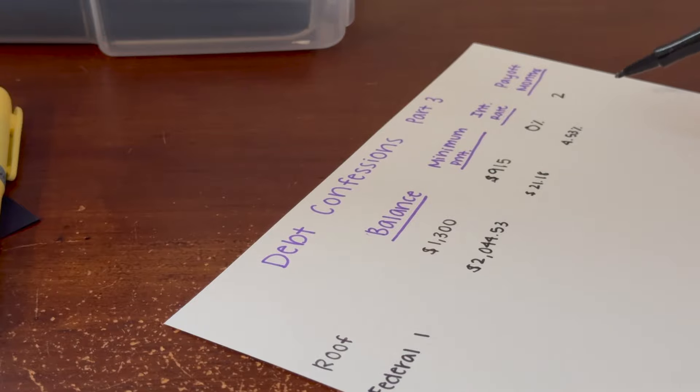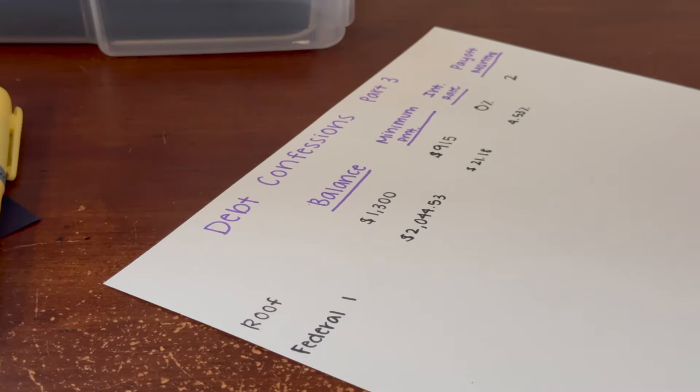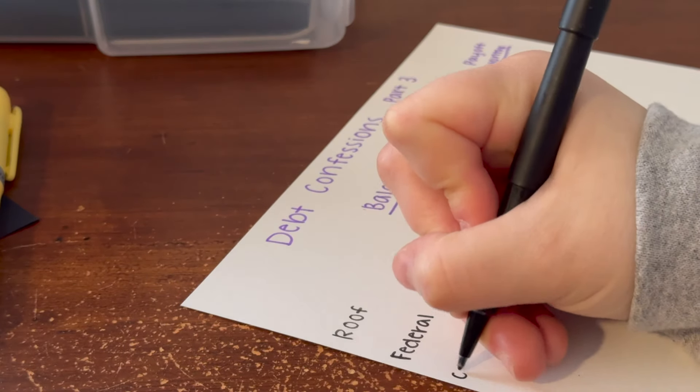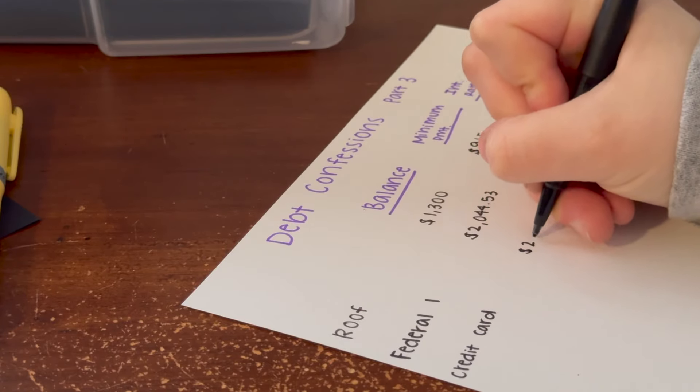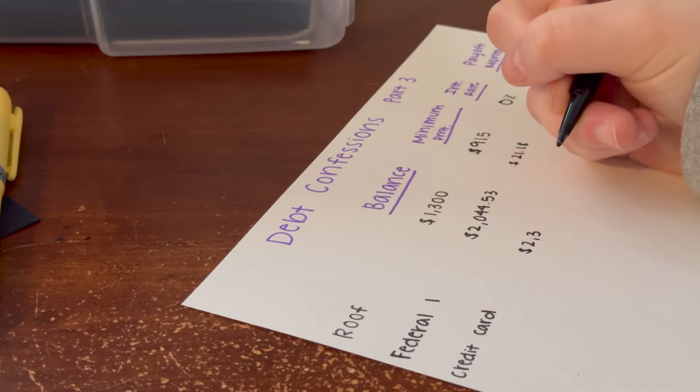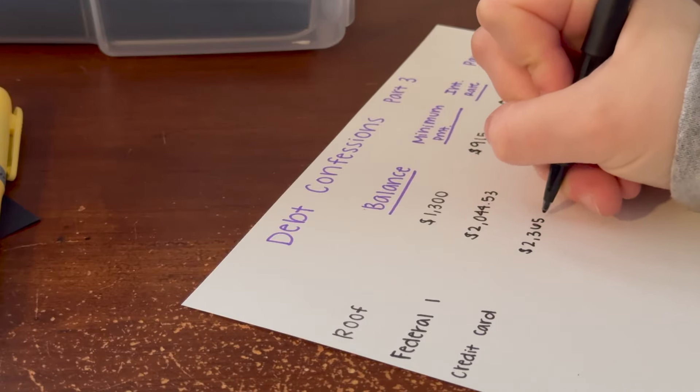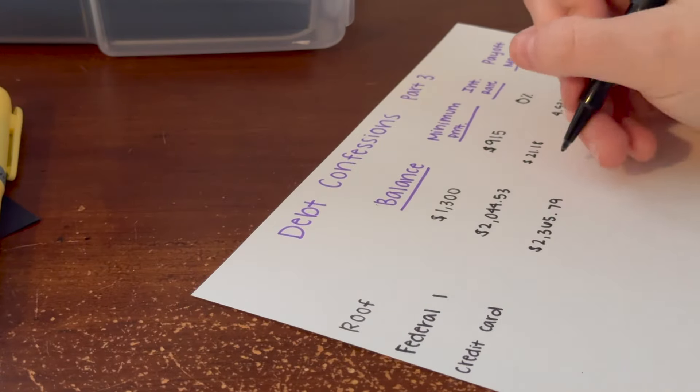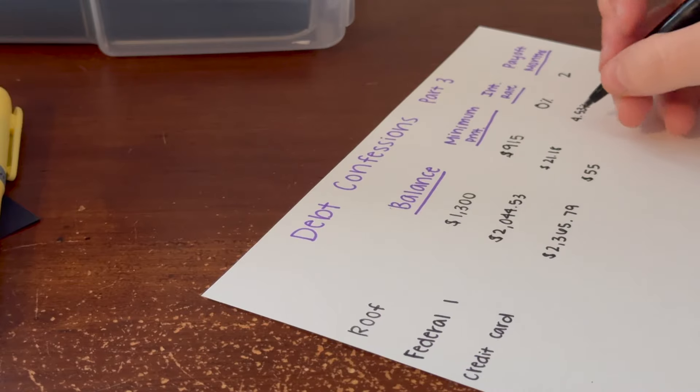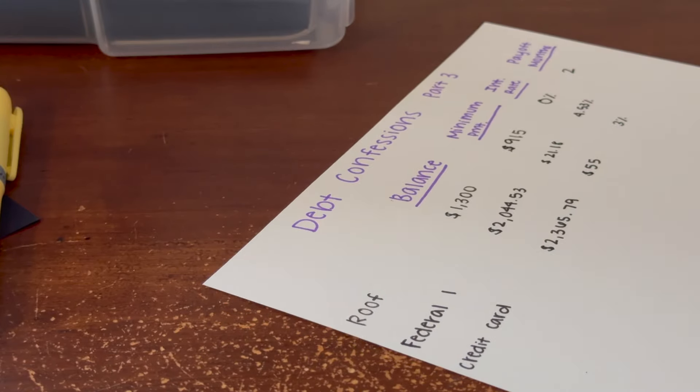I'm actually going to skip the payoff months for now because we're going to do some math. We're going to lay them all out and then we'll come back to that. After that, my next highest debt is my credit card, and the balance on this one is $2,365.79. The minimum payment on it is $55 and the interest rate is about 13%.